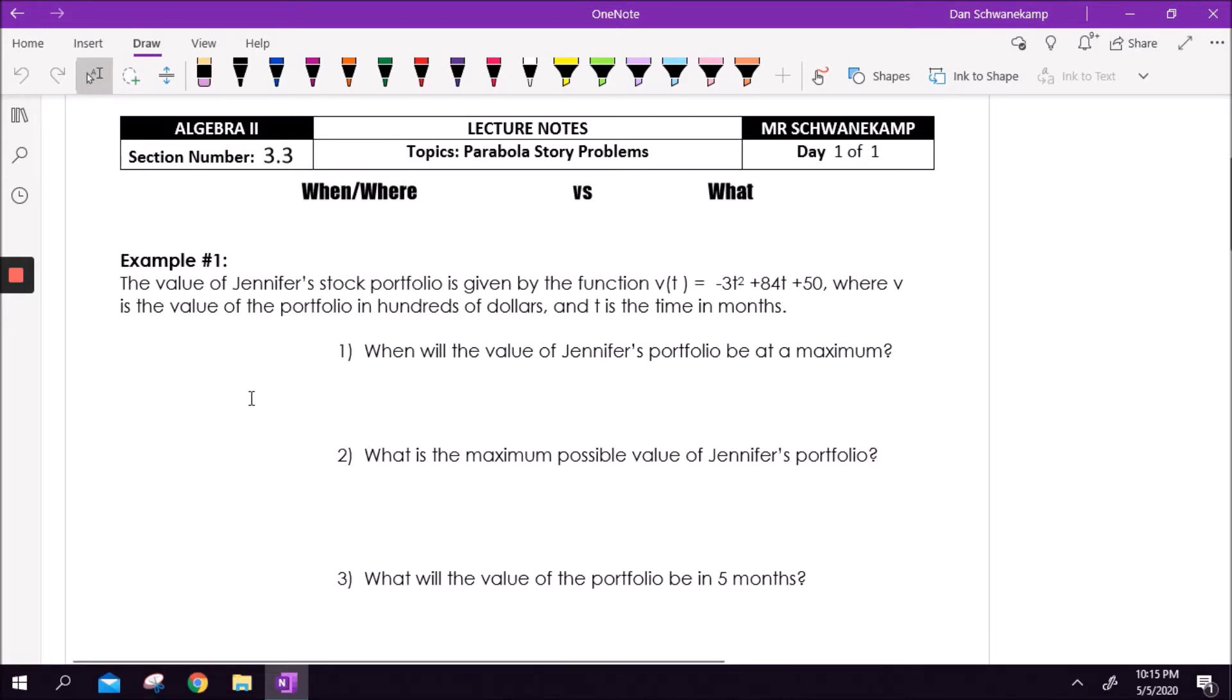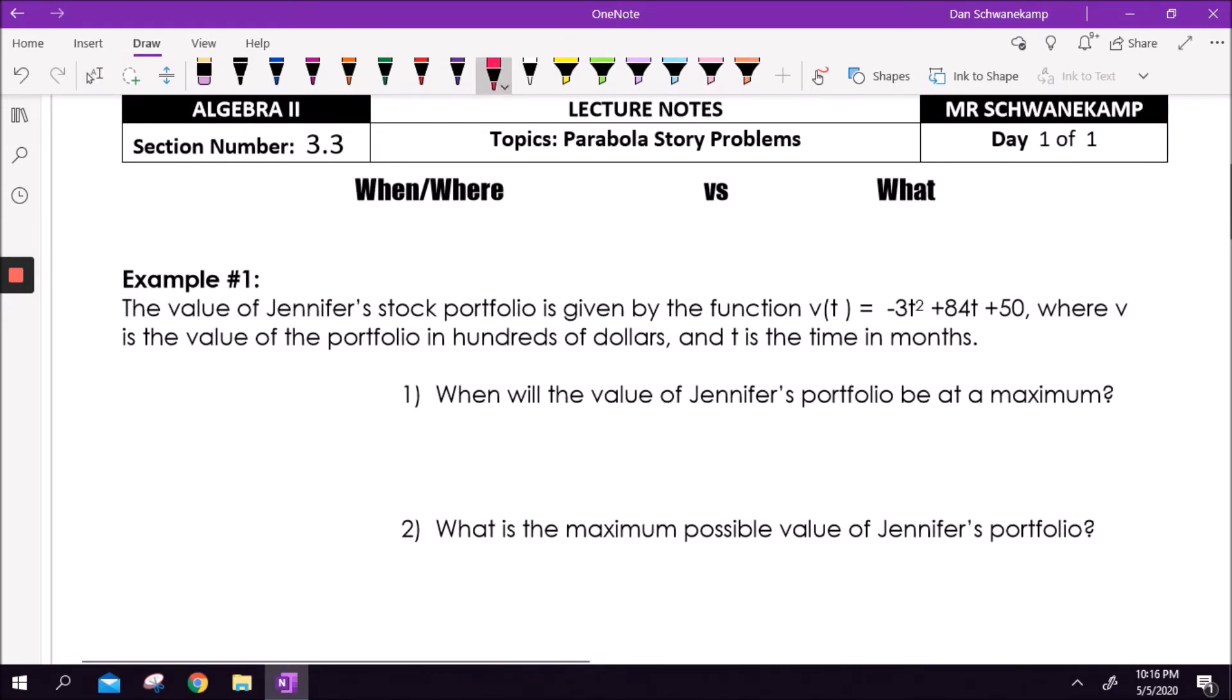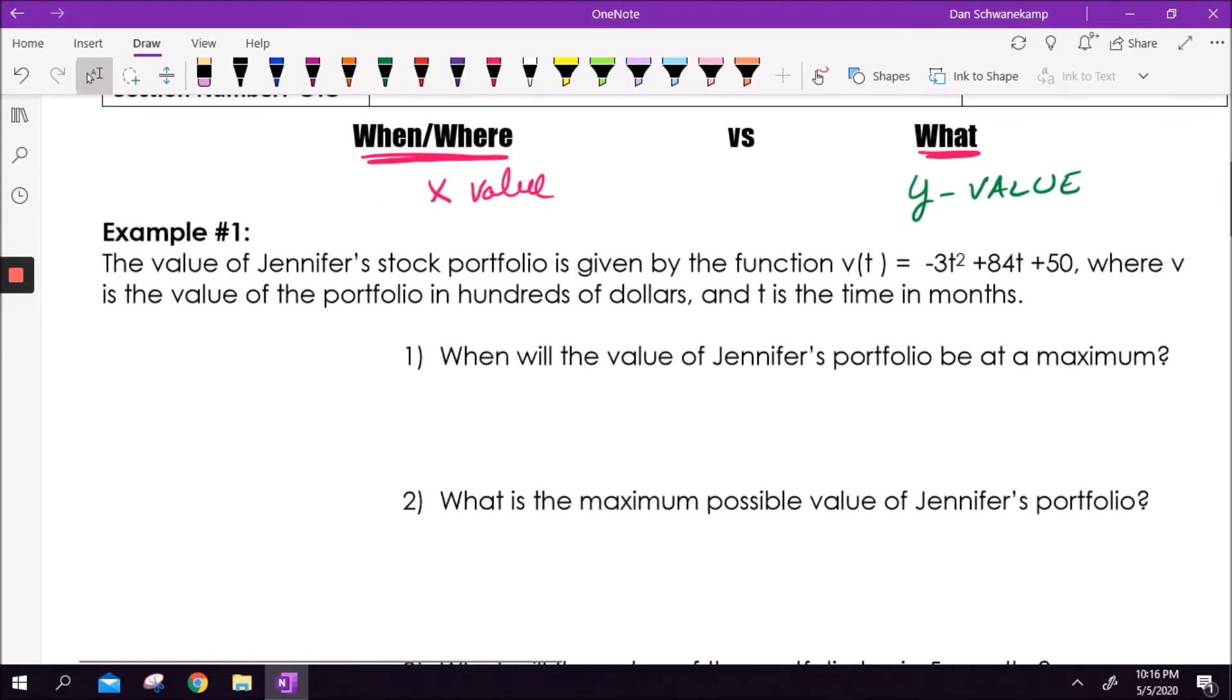Let's look at the top part here. Understand the difference between these two concepts. If the question in the problem you're doing is asking for when or where something is happening, they are 95% of the time talking about the x-value of the problem. You're going to find the x-value or sometimes the t, they make it even easier and call it t for time. If we are solving for the what, like what was the height, what was the amount, that is normally a y-value question. Just keep that in mind. It's helpful in story problems to understand what am I looking for here.